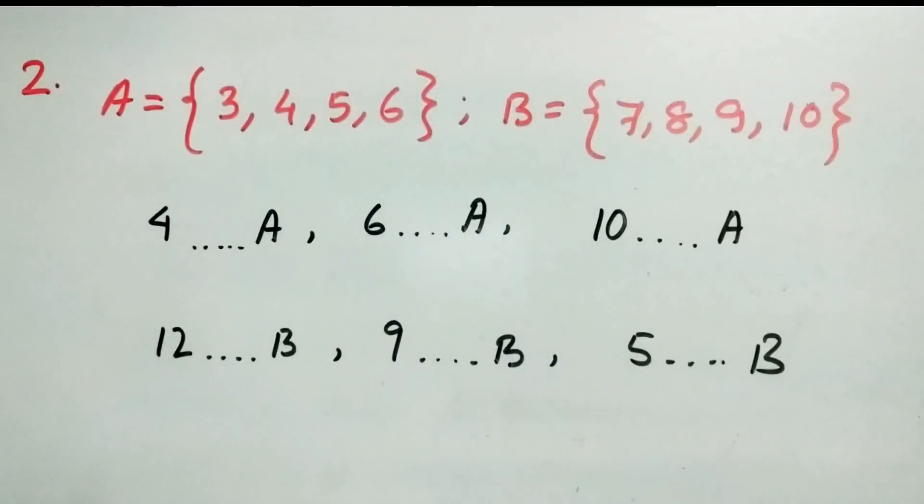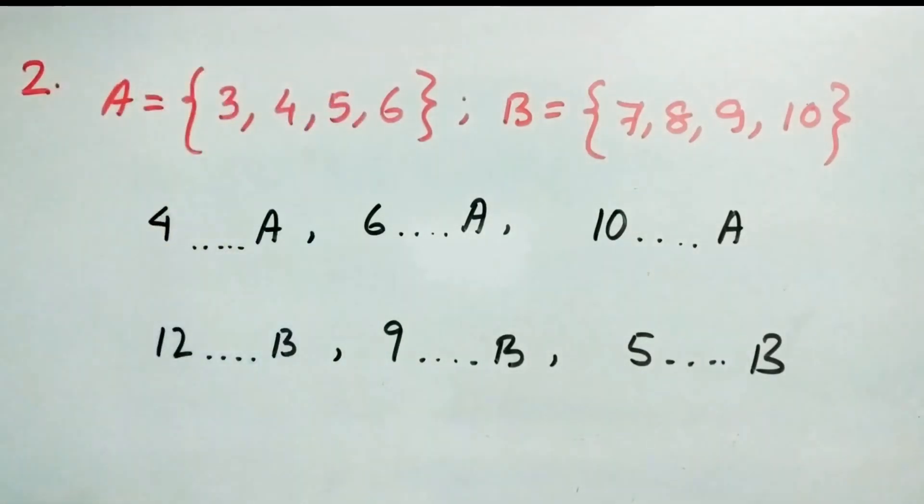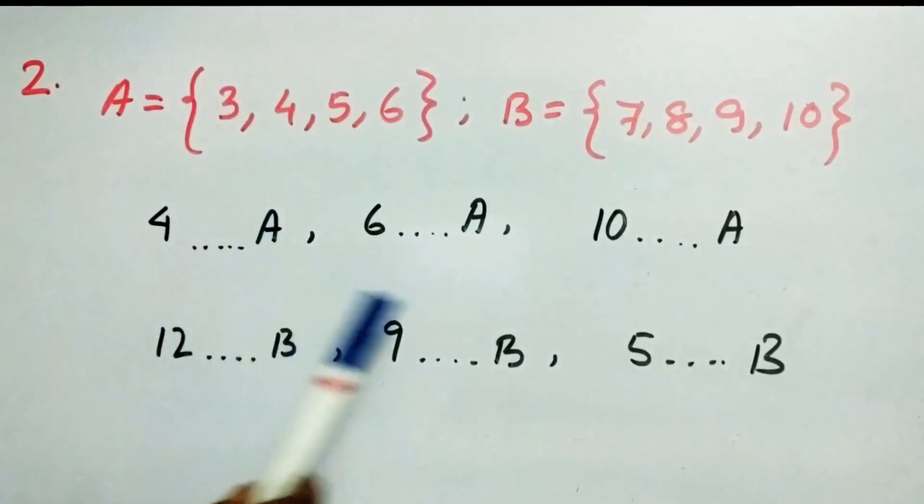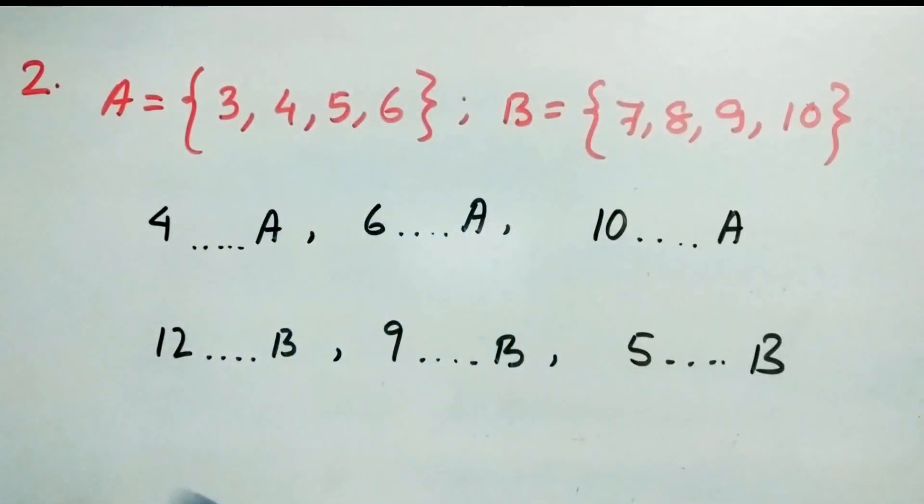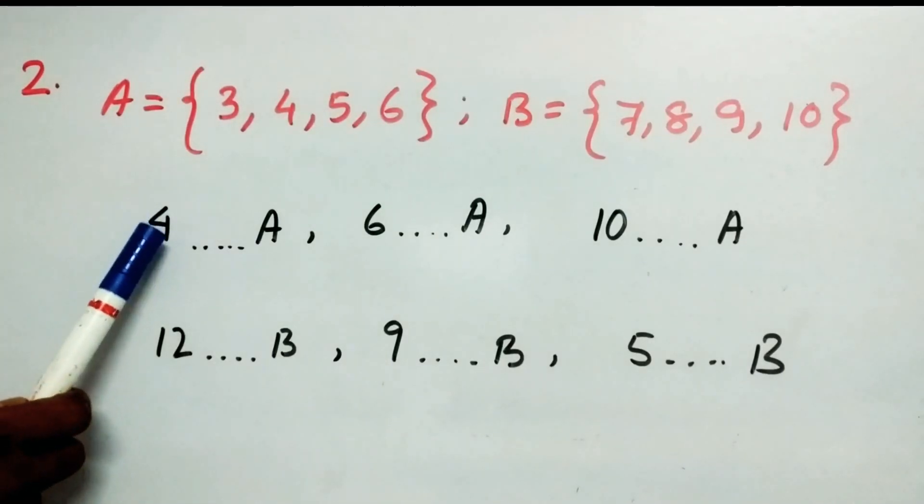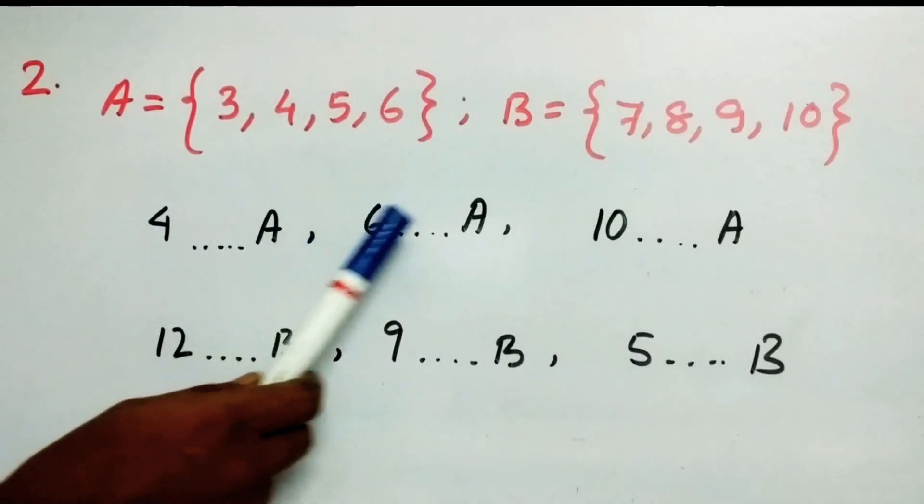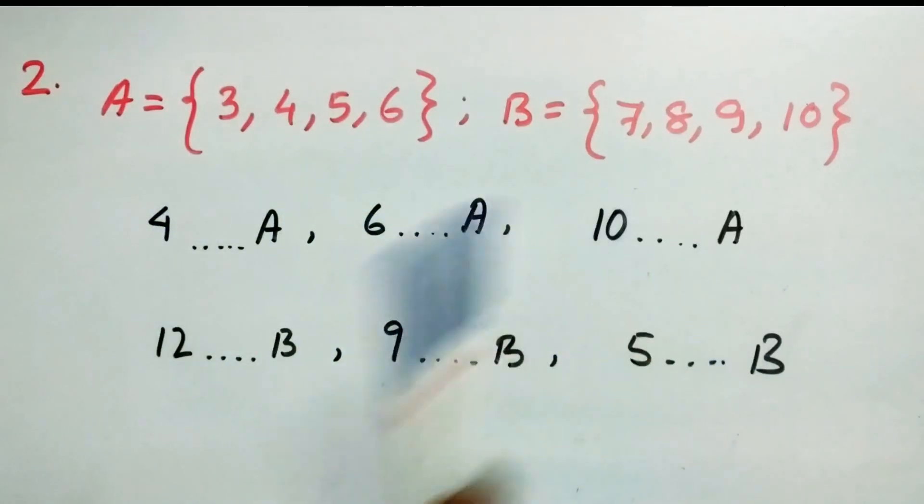Now set A is equal to 3, 4, 5, 6 and that means in the set A the elements are 3, 4, 5 and 6. Now set B is equal to 7, 8, 9, 10. So we have to see or we have to check whether this 4 belongs to A or not. This 6 belongs to A or not and so on.